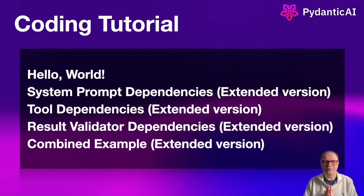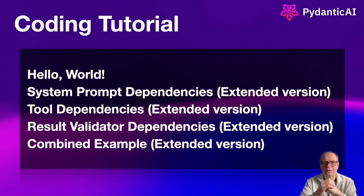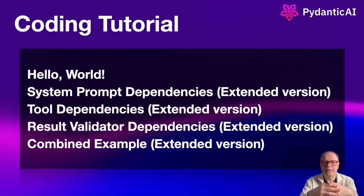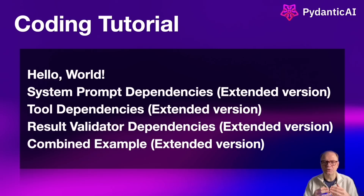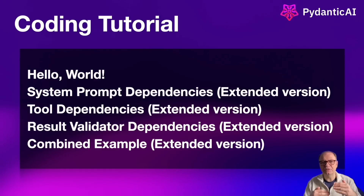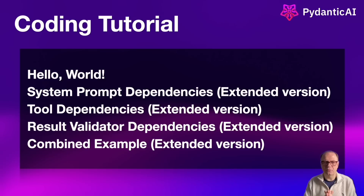Today we'll work on five examples, starting with a Hello World and then moving on to more complex DI scenarios. In the Hello World example, we'll cover a career coach agent — you provide a prompt, and it suggests ways to transform your career into one that uses AI. It's a simple example using dependency injection at both the agent level and the tools level.